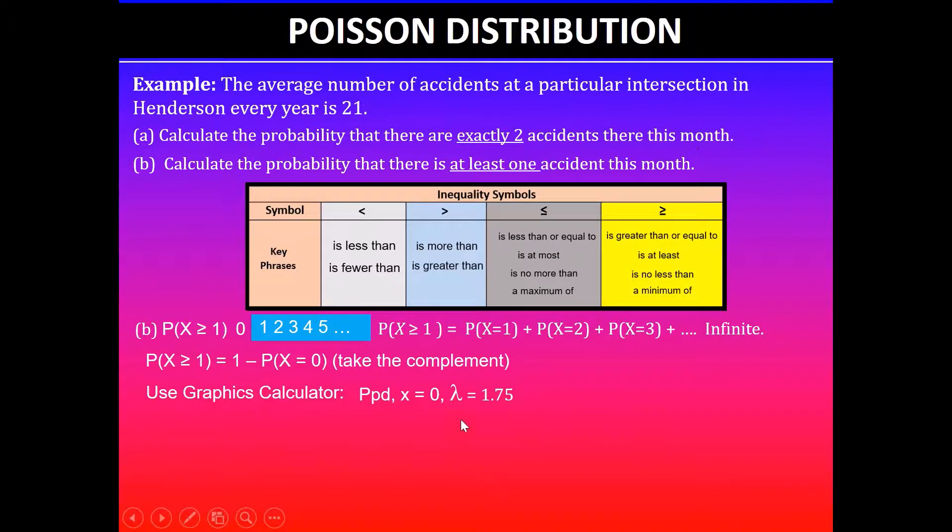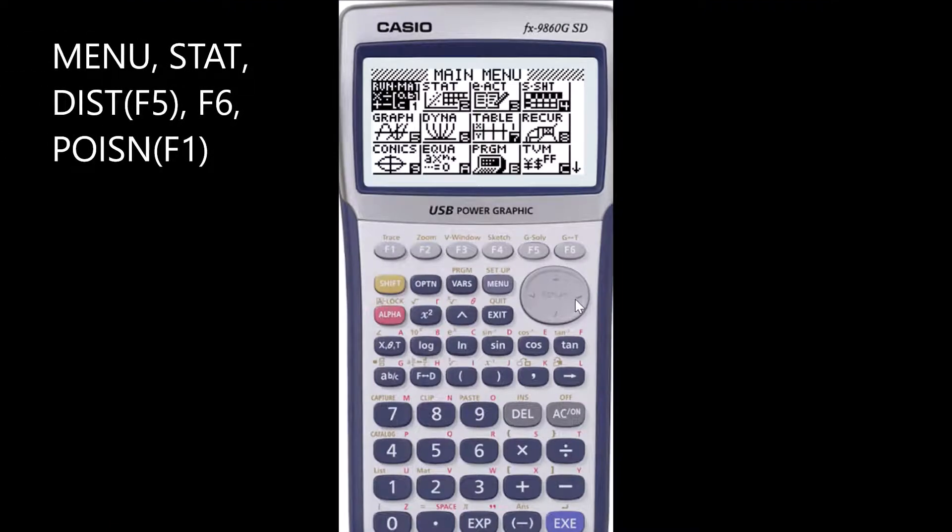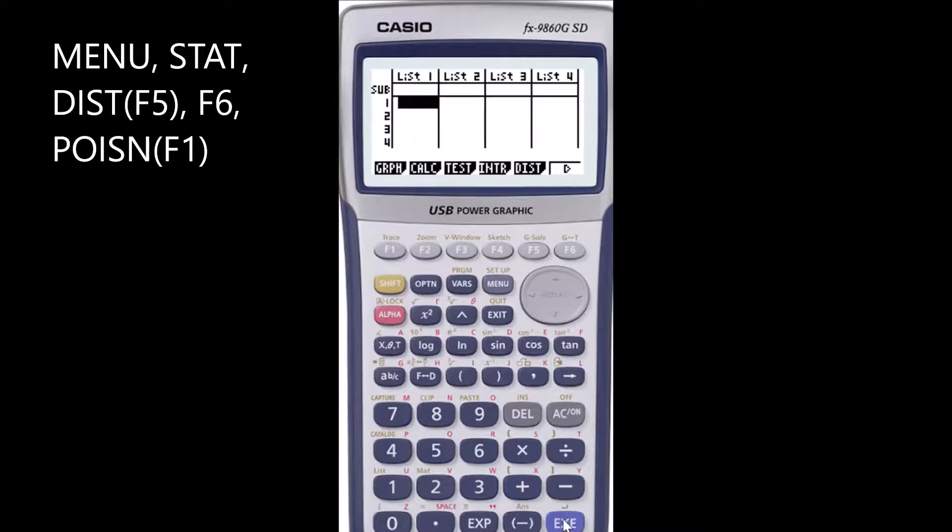So 21 divided by 12 will give you per month. Using the graphics calculator, from the main menu select stats menu and then F5 distributions. In this case we've got options here binomial, normal, but we need to look for Poisson distribution.